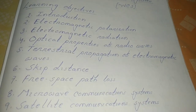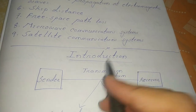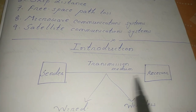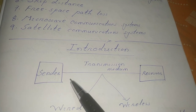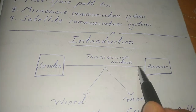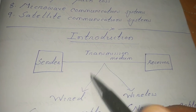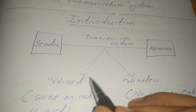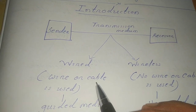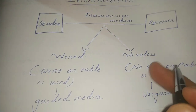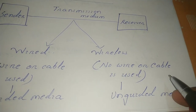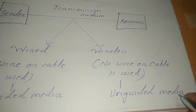Let's see the introduction. We know that in a data communication system, a sender and a receiver are there, and we communicate data between them by means of a transmission medium. That transmission medium may be wired or wireless. In a wired transmission medium, a wire or cable is used, which is also called guided media. In a wireless transmission medium, no wire or cable is used, and it is called unguided media.